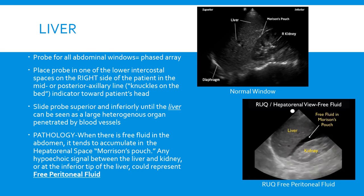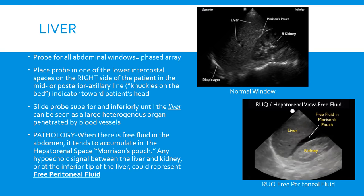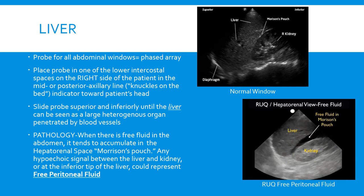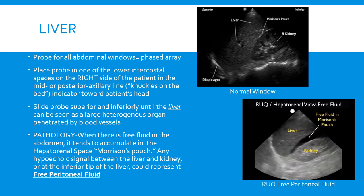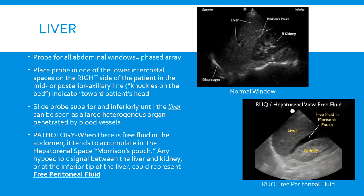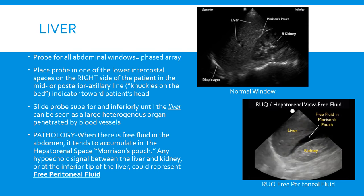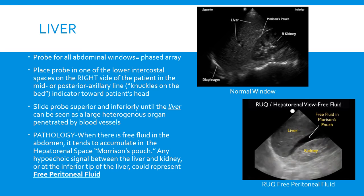The first thing we're going to look at is the liver, seen as a large heterogeneous organ penetrated by blood vessels. You'll see the kidney abutting it inferiorly, and in between the liver and kidney is an area called Morrison's pouch. When there's free fluid in the abdomen it tends to accumulate here. Fluid will first accumulate around the tip of the liver, and as more accumulates you'll see a separation with a hypoechoic signal between the liver and the kidney.